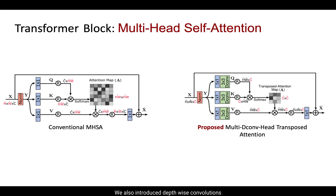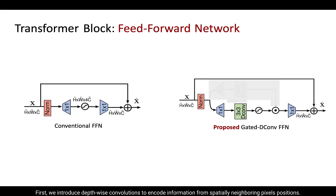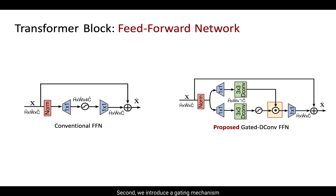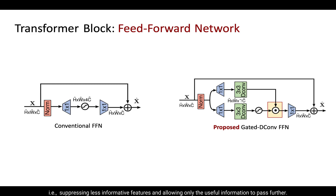We also introduce depthwise convolutions to emphasize local context before computing non-local interactions. In the conventional feed-forward network, we propose two modifications to improve representation learning. First, we introduce depthwise convolutions to encode information from spatially neighboring pixel positions, which is useful for learning local image structure. Second, we introduce a gating mechanism formulated as the element-wise product of two parallel paths of linear transformation layers, one of which is activated with a non-linearity. This gating mechanism performs controlled feature transformation, suppressing less informative features and allowing only useful information to pass further.